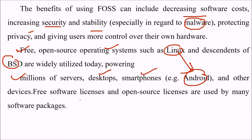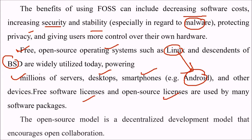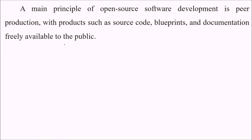Free software licenses and open source licenses are used by many software packages. The open source model is a decentralized development model that encourages open collaboration with the community. The main principle of open source software development is peer production, with products such as open source code, blueprints, and documentation freely available to the public.